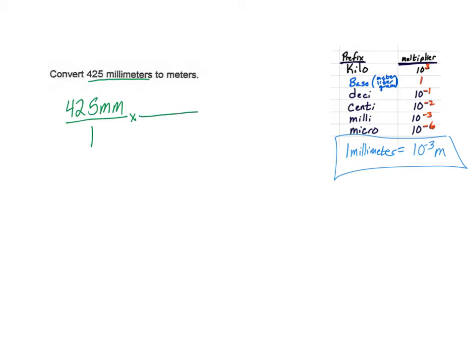Now you need to determine what goes on the bottom — are we going to put meters or millimeters on the bottom? We're going to put millimeters on the bottom, and meters on top. Now we just have to figure out where the numbers go. Remember, with the main unit we're going to have the exponent. If we look at our equation, we see that 1 millimeter is equal to 10 to the negative 3 meters. So we write the 1 with the millimeter and the 10 to the negative 3 with the meters.